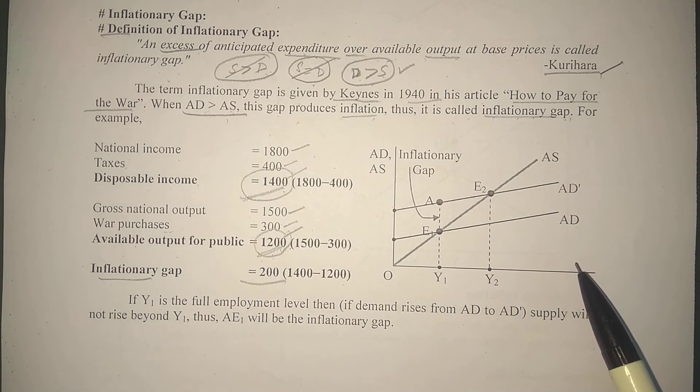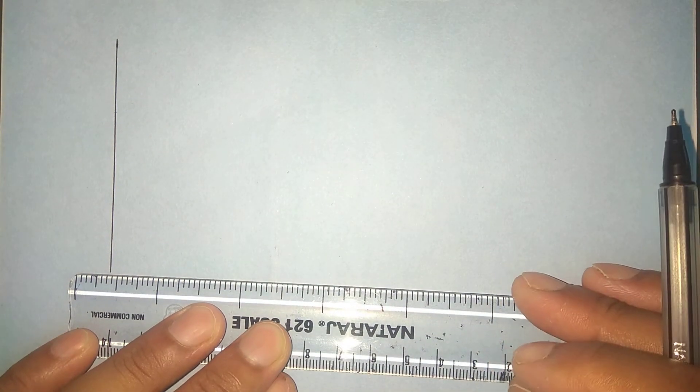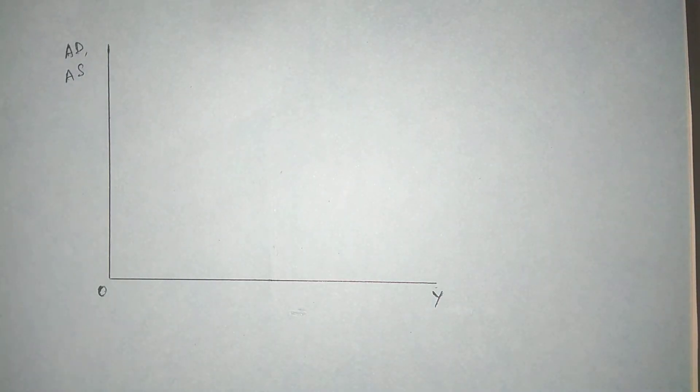तो इसको हम इस diagram के साथ भी explain कर सकते हैं। Let us draw this diagram again — आप भी इस diagram को मेरे साथ बनाईए, ताकि आपको step by step इसका पूरा पता चल जाए कि कैसे बनानी है। First the axes: on horizontal we are taking output or income; vertically we are taking aggregate demand and aggregate supply — AD and AS.